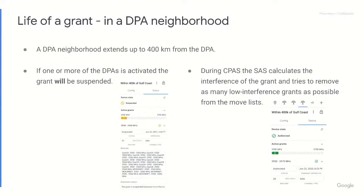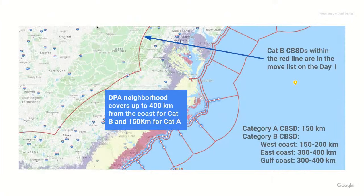Let's take a closer look at DPAs. SASS support has received a lot of questions regarding grant suspensions due to DPA activations. The first point is that a DPA neighborhood extends up to 400 kilometers from the DPA. How big is a DPA neighborhood? It is 400 kilometers from the DPA. You can see here in this slide that the DPA extends all the way to that inner red line. All CBSDs that fall within that red line are on the move list on day one.